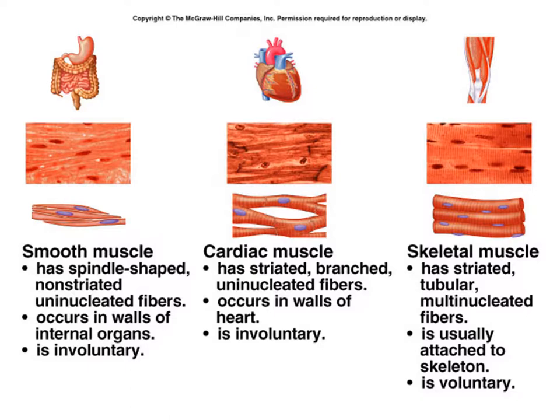The final type of muscle is skeletal muscle. It is striated as well, tubular in its structure, but it is multinucleated — there are multiple nuclei for every single cell, all on the fibers. It is usually attached to the skeleton and is voluntary.